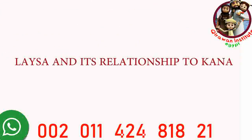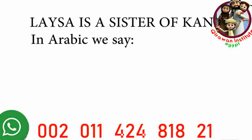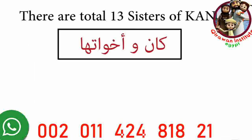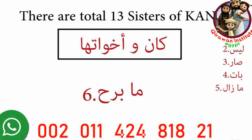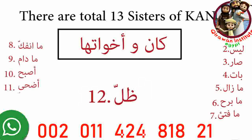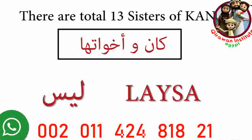In this lesson we're going to learn about leysa and its relationship to kana. Leysa is a sister of kana — in Arabic we say leysa min achawat kana. There are a total of thirteen sisters of kana, including kana, leysa, sara, bata, mazala, mabariha, mafatiha, mainfak, madama, aspaha, adhaa, dhala, and amsa. In this lesson we'll only be looking at leysa and how it's affected by its relationship to kana wa'ahawatiha.